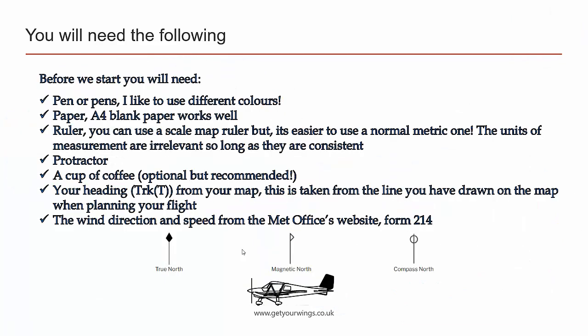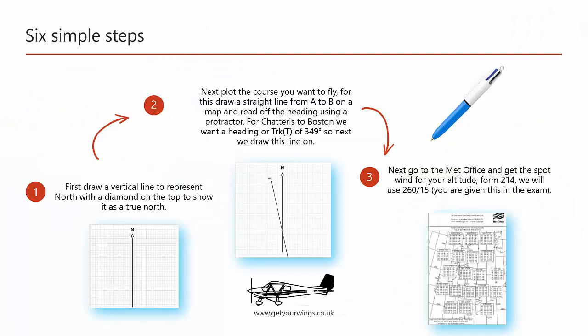You'll need some things before we get going and these are listed out here. First thing we're going to do is on a sheet of paper we'll draw north and then we'll add to it our track true or heading. For this example we're using Chatteris to Boston and a heading of 349 degrees.